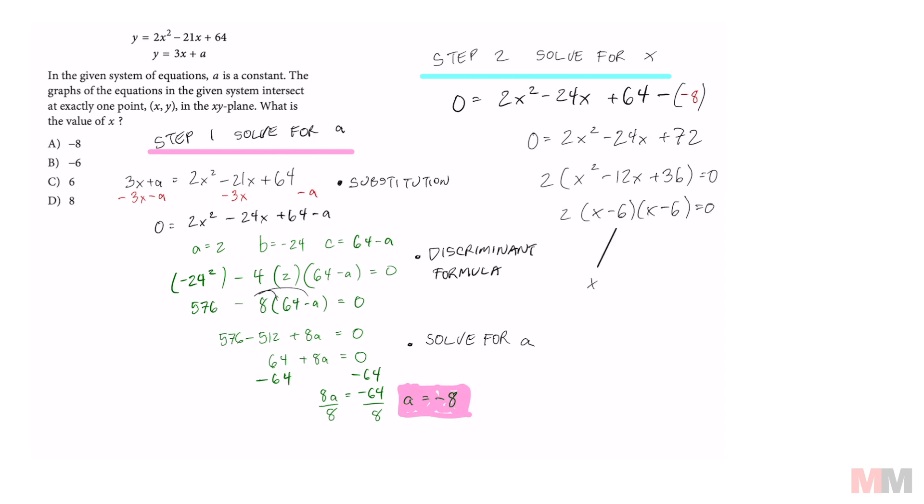So at the end, we can set that equal to 0. And we don't have to do it twice because it's the same binomial. Add a 6. And we finally get X equals 6.